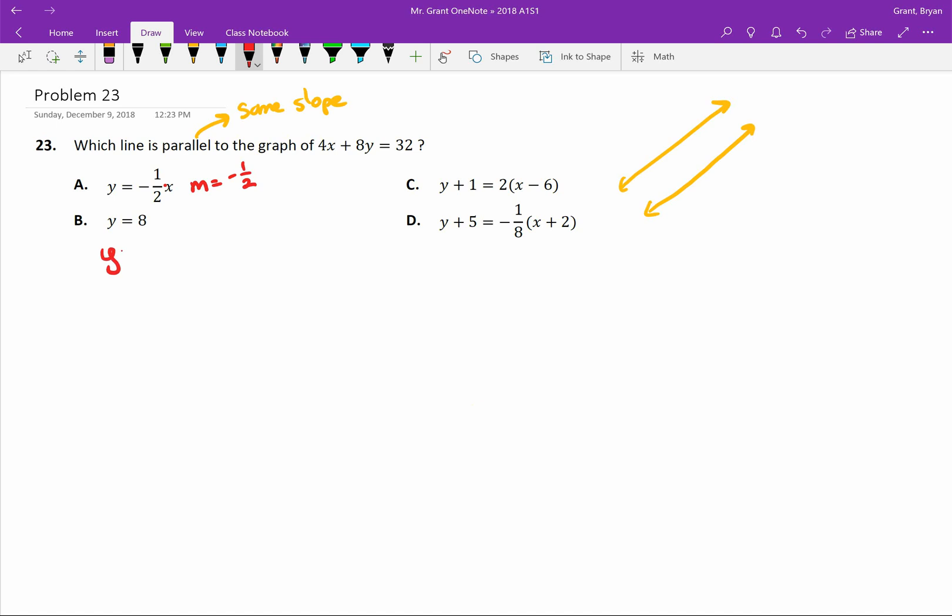This y equals 8 is a little harder because I don't see any x's there so I'm actually gonna rewrite this and since there aren't any x's I'm gonna say there are zero x's here plus 8. And now when we've written it like this the number multiplying by x is zero so it tells us our slope is zero.